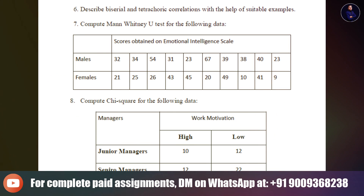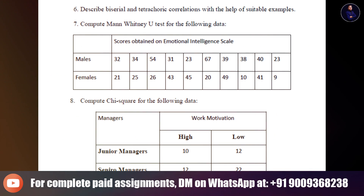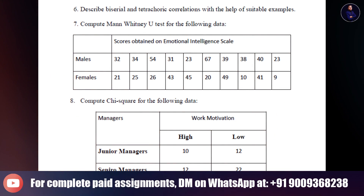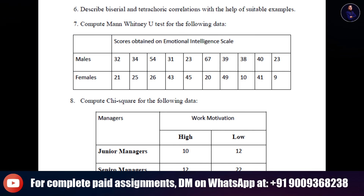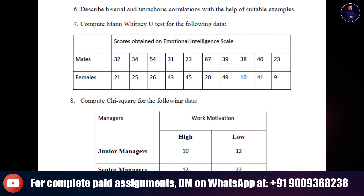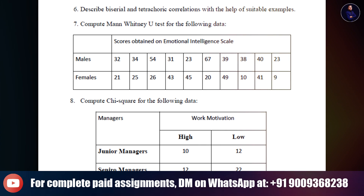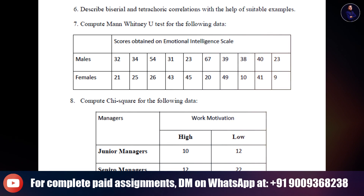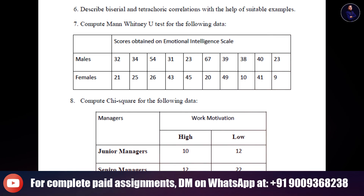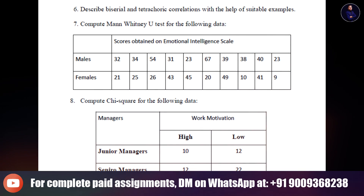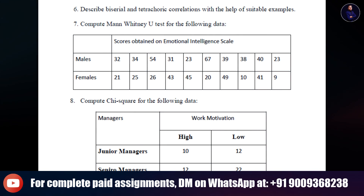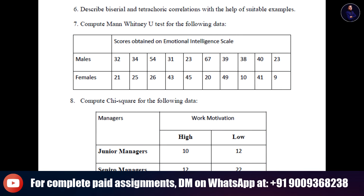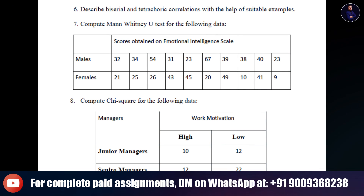6. Describe biserial and tetrachoric correlations with suitable examples. 7. Compute Mann-Whitney U test for the following data. Scores obtained on emotional intelligence scale. Table is given below. 8. Compute chi-square for the following data. Table is given below.